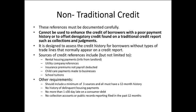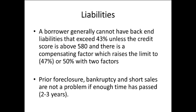There can be no collection accounts or public record reporting in the past 12 months for non-traditional credit. A borrower generally cannot have a back-end liability exceeding 43% unless the credit score is above 580, with compensating factors raising the limit to 47% or 50% with two factors. Prior foreclosure, bankruptcy, and short sales are generally not a problem if enough time has passed and credit has been reestablished — typically two or three years in the past.